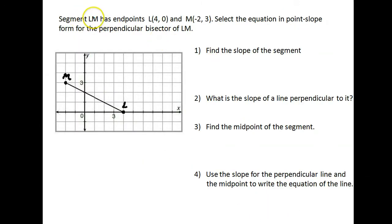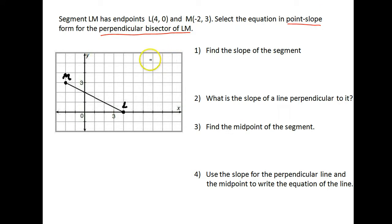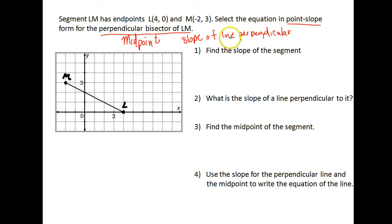In this next example, they give us a graph of a segment. Segment LM has endpoints at (4, 0) and (-2, 3). We want, in point-slope form, the equation of a line that's the perpendicular bisector of LM. Again, what we're going to need to find is the midpoint — that's the point we use — and then the slope of a line perpendicular to LM. Those are the two things we'll use to write our equation in point-slope form.